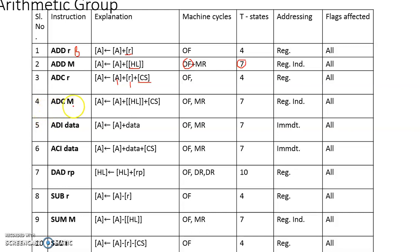The fourth instruction is ADC M. Similar to ADC R but using M — the memory location pointed by the HL pair — instead of a register. This asks the processor to add the content of the accumulator with the content of the memory location pointed by the HL pair, along with the content of the carry status flag from the previous operation, and place the result in the accumulator register. This is also a one-byte instruction.